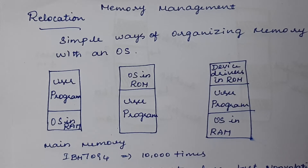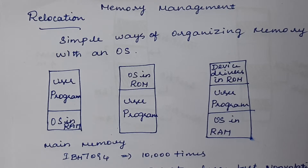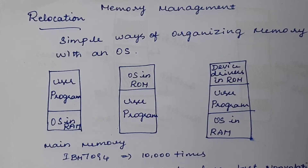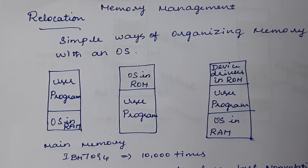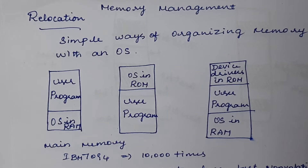We need to understand the memory hierarchy. Computers have a few megabytes of very fast cache memory at the top of the hierarchy, where frequently used data is stored. Cache is volatile and has low capacity. The next level is main memory, which consists of gigabytes of medium-speed, medium-priced volatile storage.